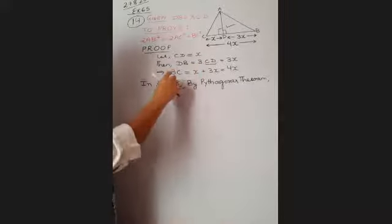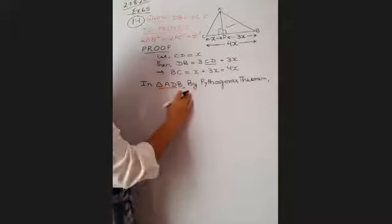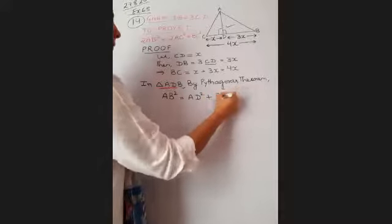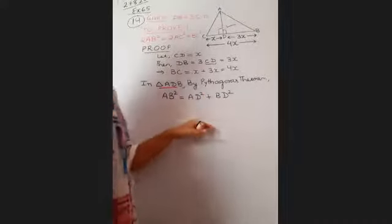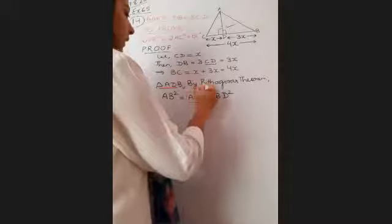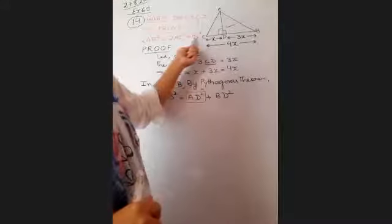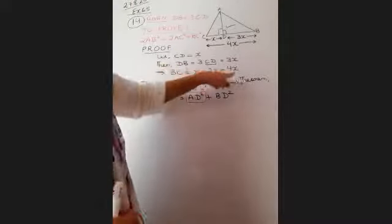Let us apply the Pythagoras theorem in triangle ADB. We get: AB squared equals AD squared plus DB squared. Now, AB squared is what we need. We do not need AD squared as it is — AD squared is not needed. However, BC and BD are both related to x, so we will not disturb those terms, but we must replace AD squared.